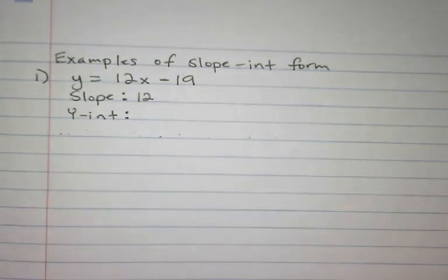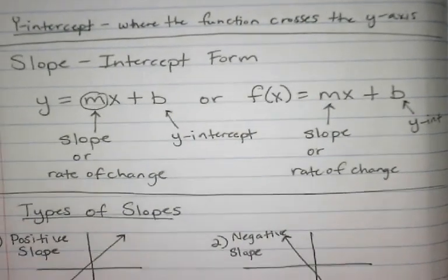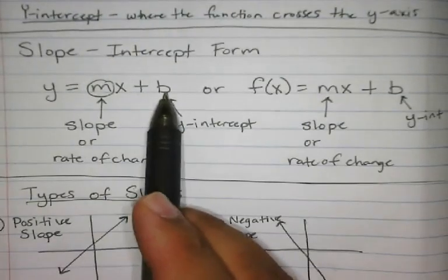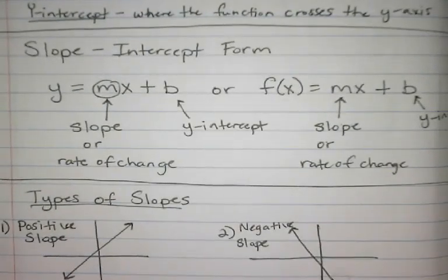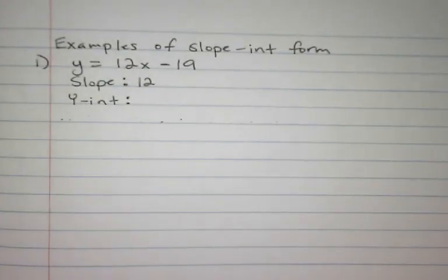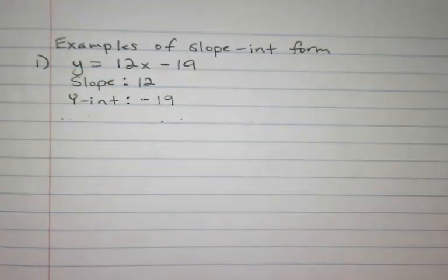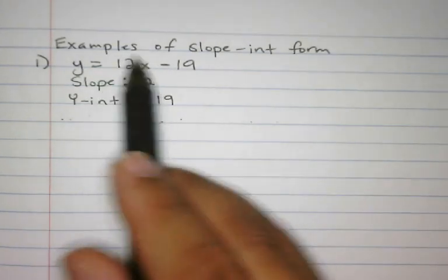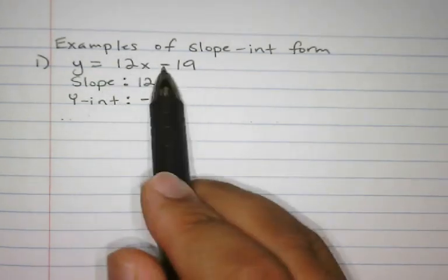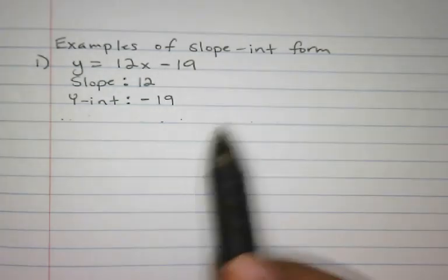So the slope is 12 because it's 12x — just the 12. Your y-intercept is negative 19. That's all we're doing: identifying the slope and identifying the y-intercept.